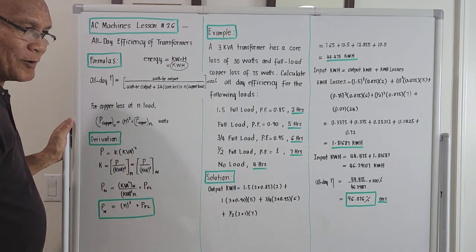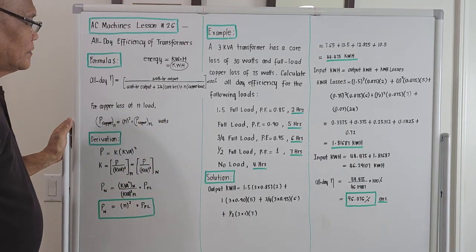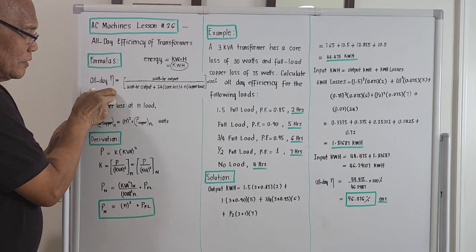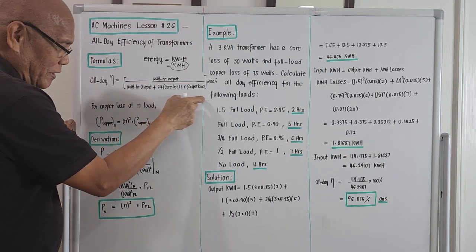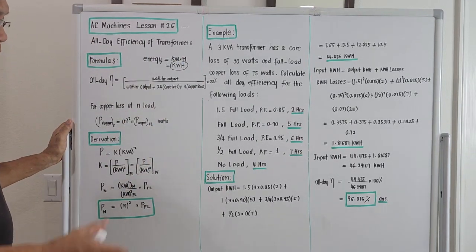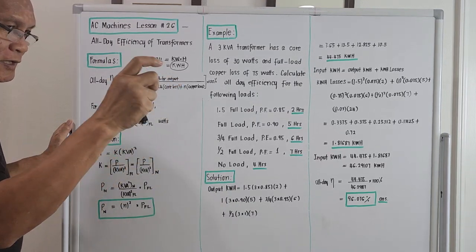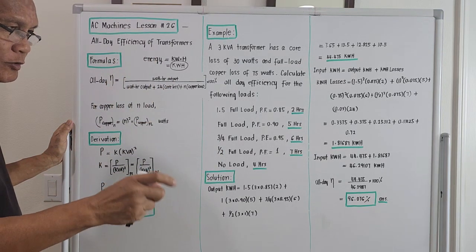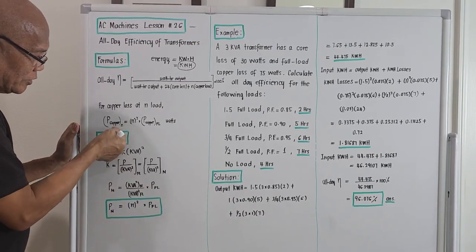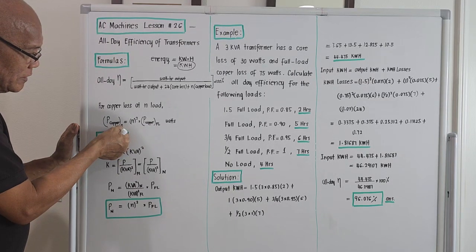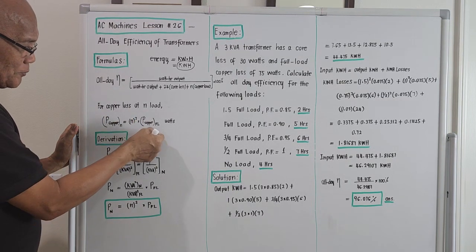Countries are fighting for oil, so energy prices are very high right now. In the computation of all-day efficiency, it should be the energy output over the energy output plus the total energy losses. The last time I derived the formula for computing copper loss: the copper loss at any load n — P subscript copper, subscript n — should equal n² times the copper loss at full load, in watts.